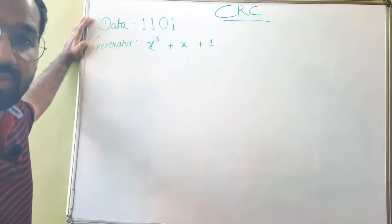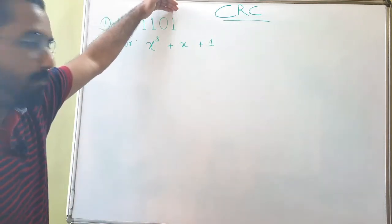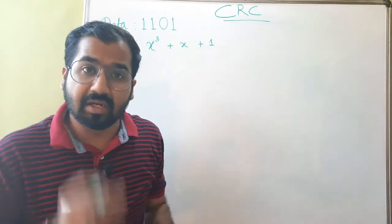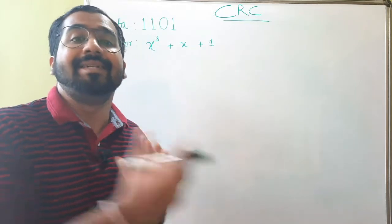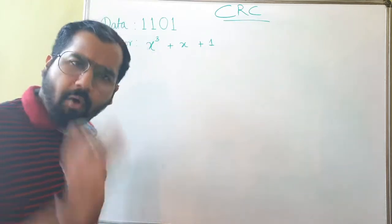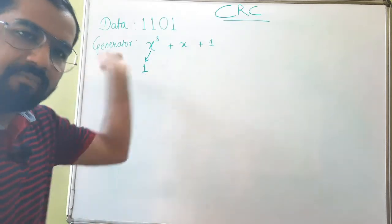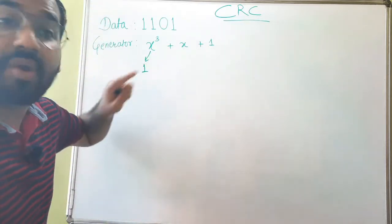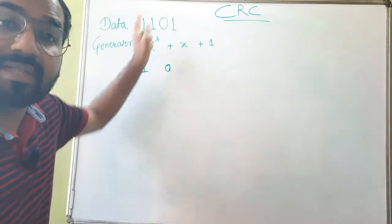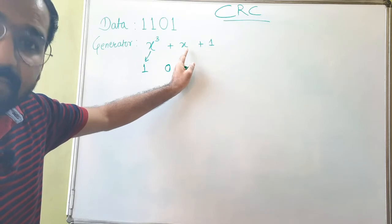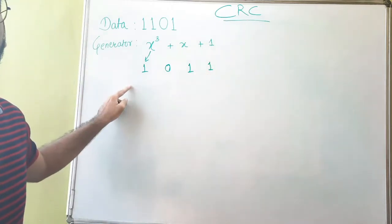There are two very important required things: first, the data that we want to send from sender to receiver — a simple 4-bit data — and a generator polynomial. We cannot use it as it is; we need to convert it into binary digits. Focus on the coefficients: the coefficient of x³ is 1, x² is not visible so it is 0, x is present so it is 1, and the constant is 1. So our generator in binary is 1 0 1 1.